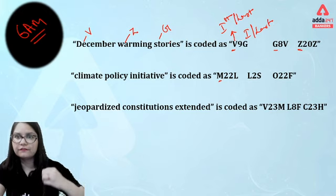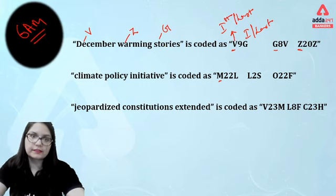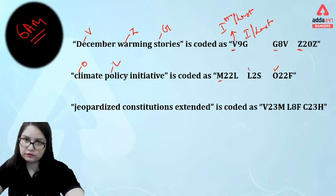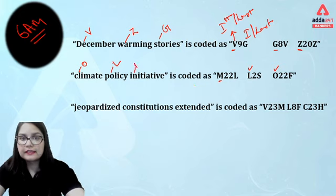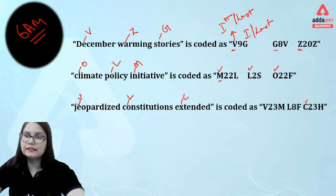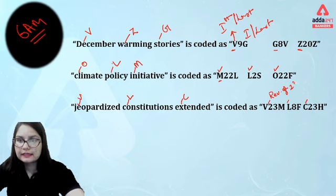Is it that the first letter comes from the opposite of the second letter? Let's check again: the reverse of L is O — yes, we are having O. The reverse of O is L — yes, we are having L at the very first. The reverse of N is M — yes, of course. It is following the same pattern. So we can identify that the first letter comes from the reverse of the second letter.